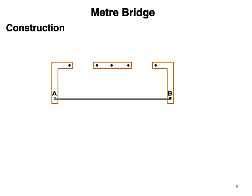The construction of the bridge consists of a wooden board, on which we fix three thick brass or copper strips so that the resistance offered by the strips is negligible. We have a one meter long wire AB made of Constantin or Eureka or Manganin - these are alloys which we normally use. This wire is stretched between A and B with uniform area of cross section.